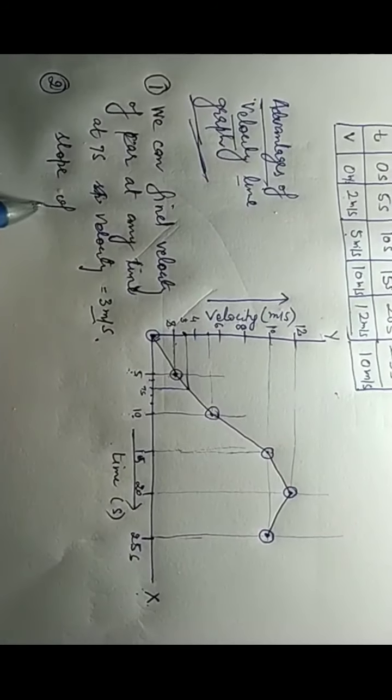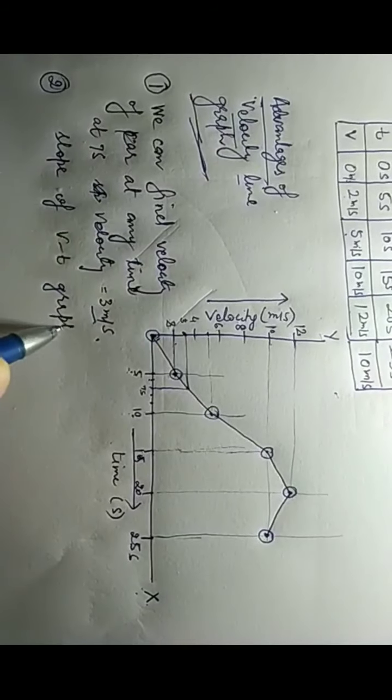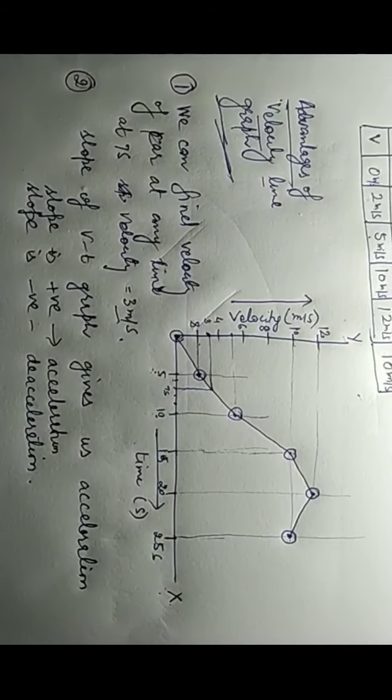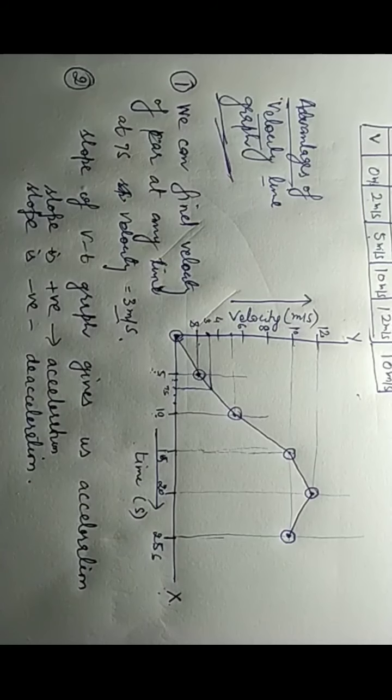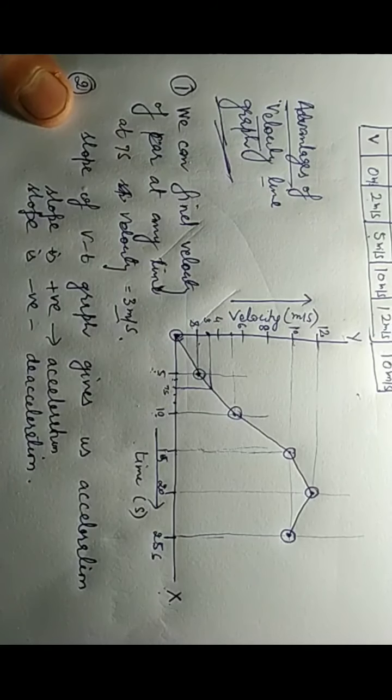The second advantage: the slope of the velocity-time graph gives us acceleration. If the slope is positive, it indicates acceleration. If the slope is negative, it indicates deceleration. Just as the slope of a position-time graph gives velocity, the slope of the velocity-time graph gives acceleration.